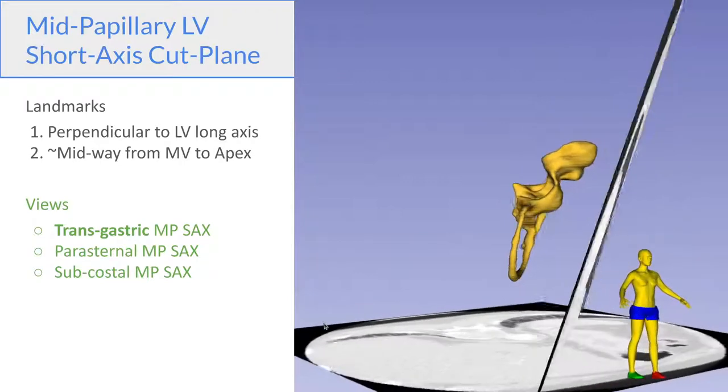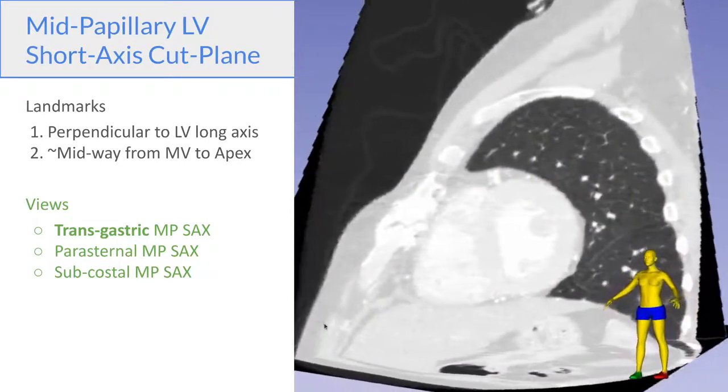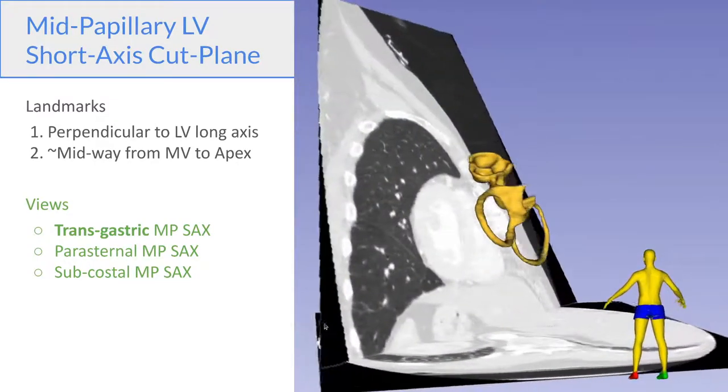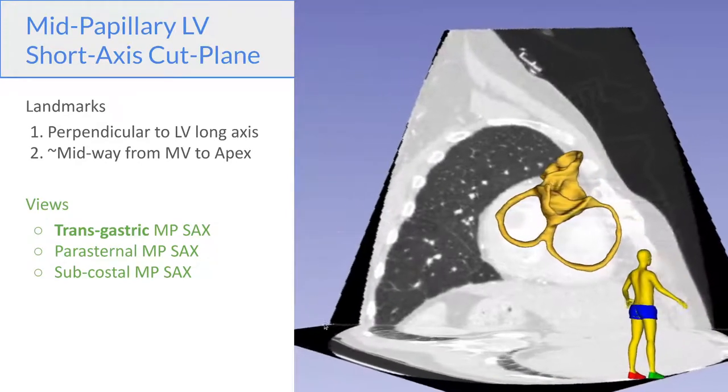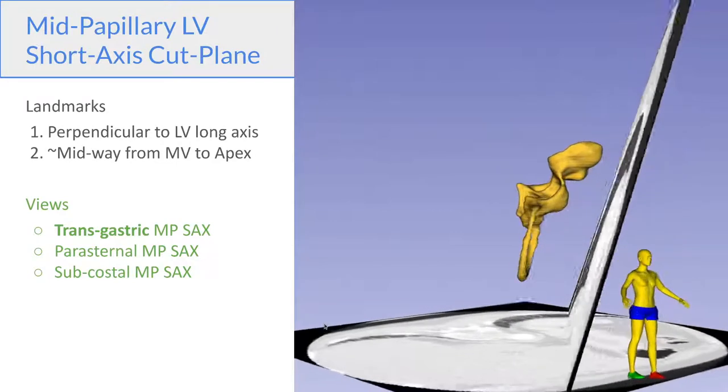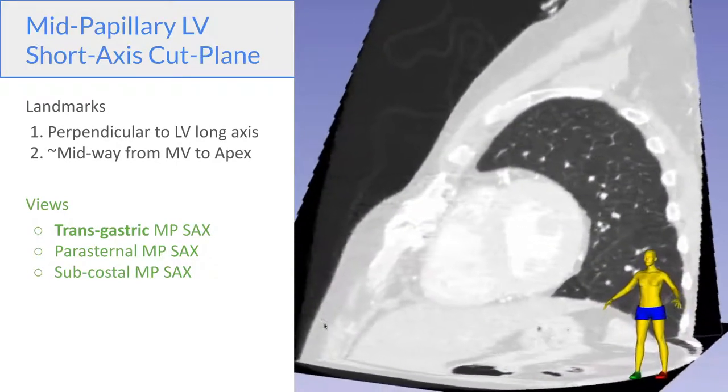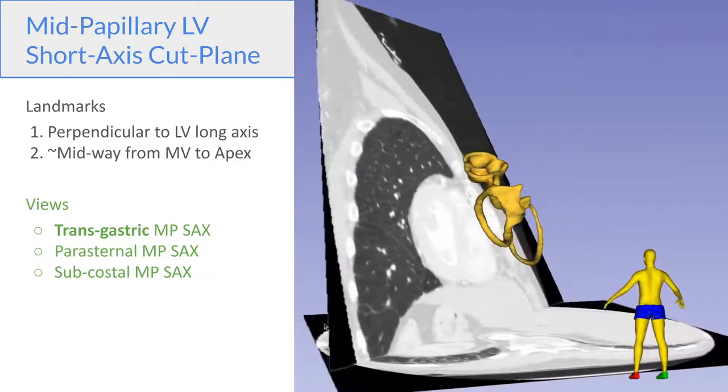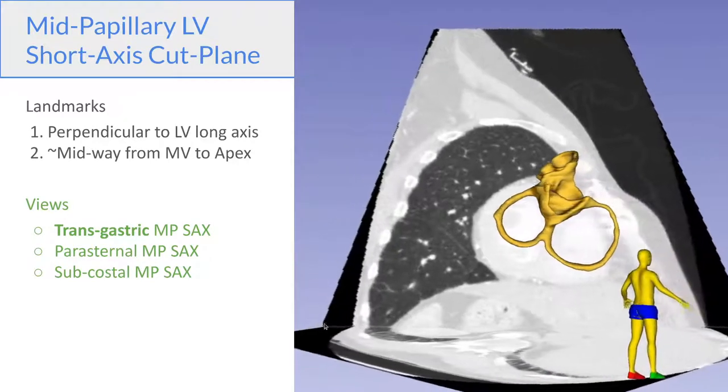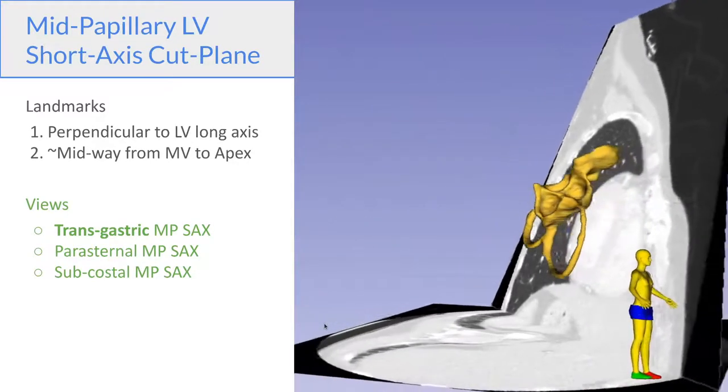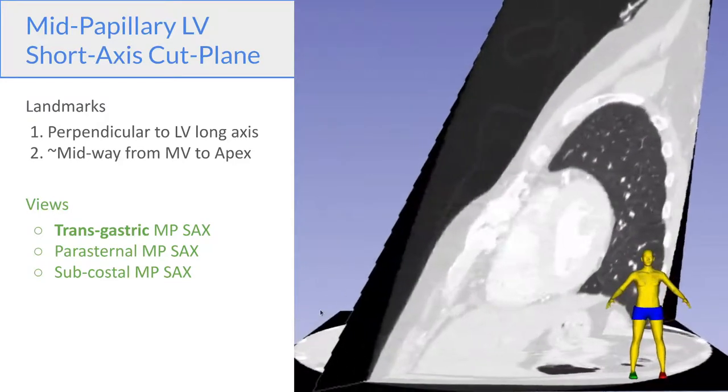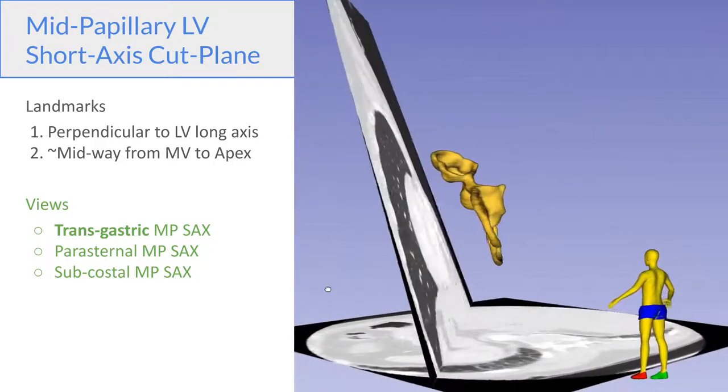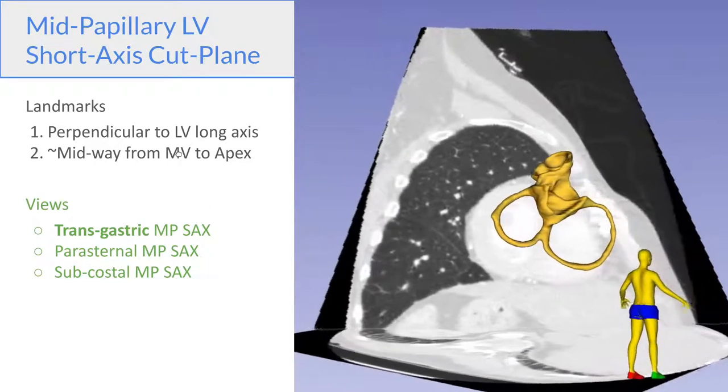And the last major cut plane is the mid-papillary short axis plane. So this plane is defined as being perpendicular to the long axis of the LV, and it's located midway between the mitral valve plane and the apex at the level of the papillary muscles. This view is significant because in most patients you have all three major coronary territories represented here. And in addition, this cross section is least susceptible to distortions because of the heart moving in and out of your imaging plane.